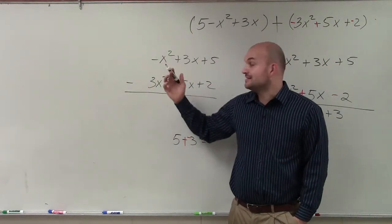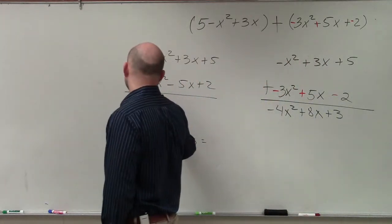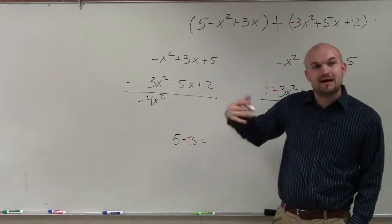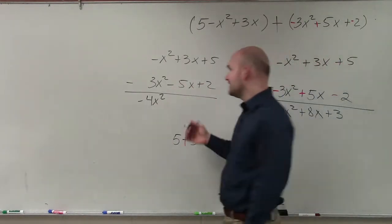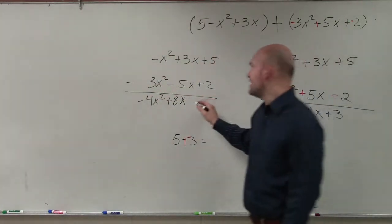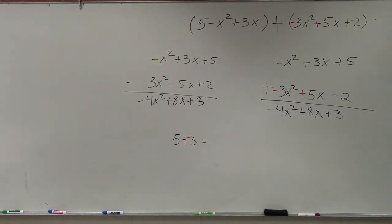-x² - 3x² is -4x². 3x minus a negative 5x—minus a negative is a double negative, so it's positive—so that's positive 8x. And 5 - 2 is going to be positive 3. And if you guys look at that, you'll see that I get the exact same answer. So it doesn't matter if you like adding or if you want to do subtracting.